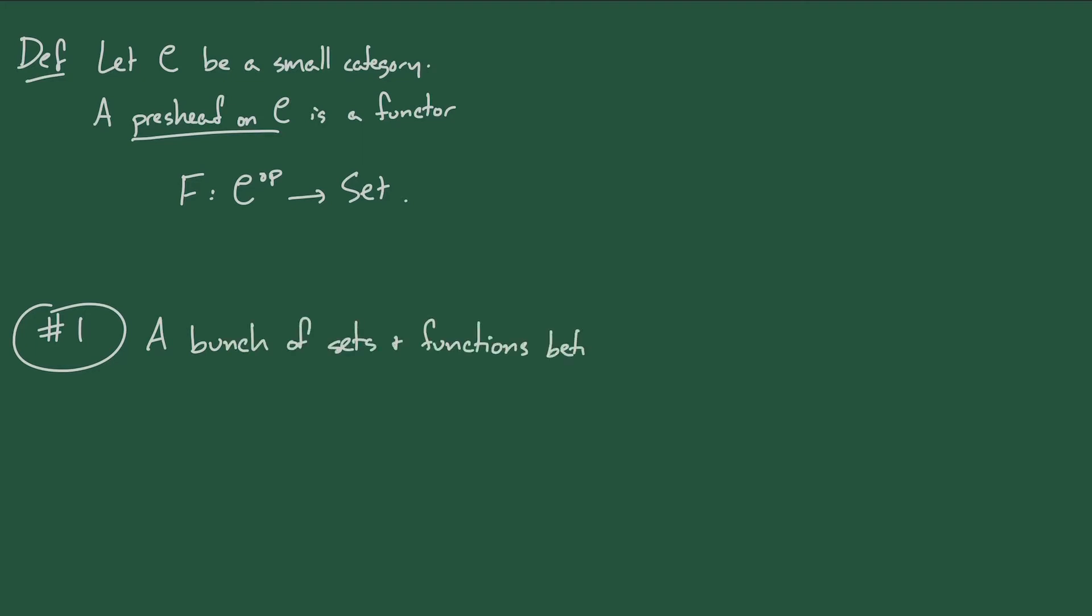So first off, what's a presheaf? If we have a small category C, that's a category that has a set of objects and a set of morphisms, then a presheaf on C is just a functor from the opposite category of C to the category of sets. So if we just unfold definitions, then first of all, we can see that the data of a presheaf is a bunch of sets and a bunch of functions between those sets.